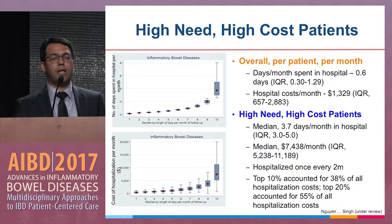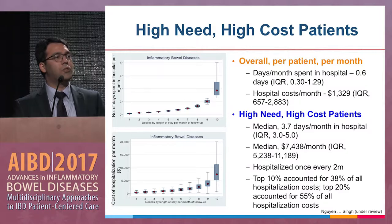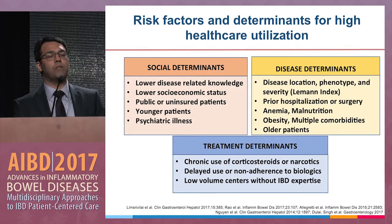The top 10% of patients account for about 40% of inpatient care, and the top 20% account for about 60% of inpatient care. So if we can actually target our resources towards these patients, we can achieve what we call population health management more effectively.